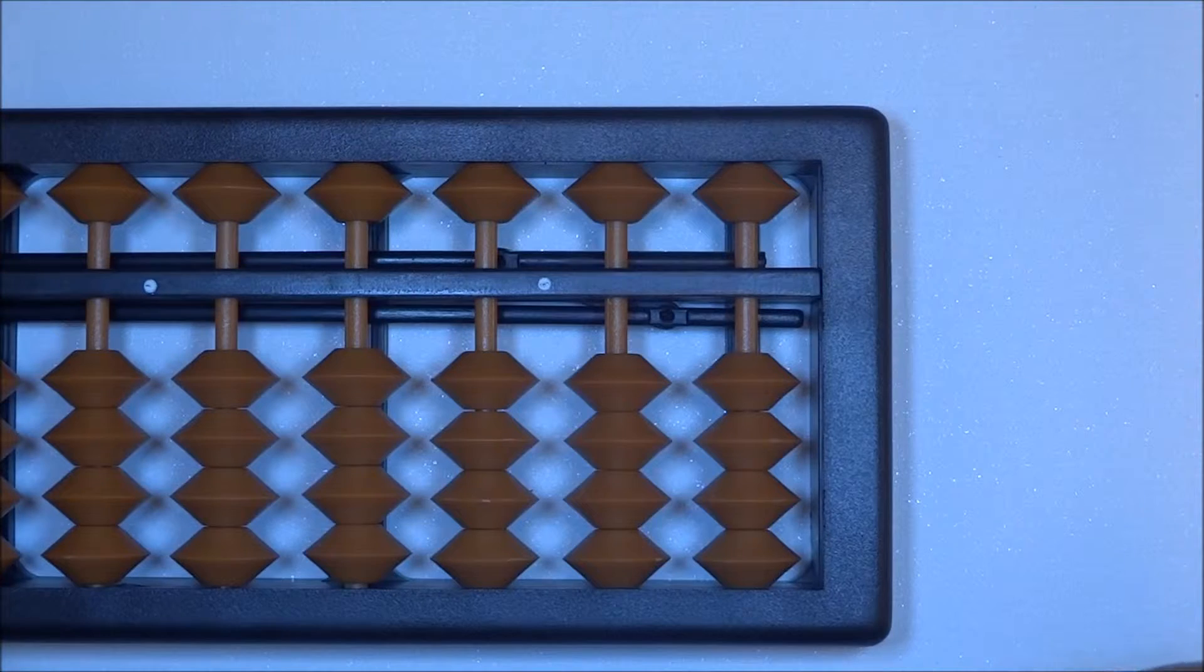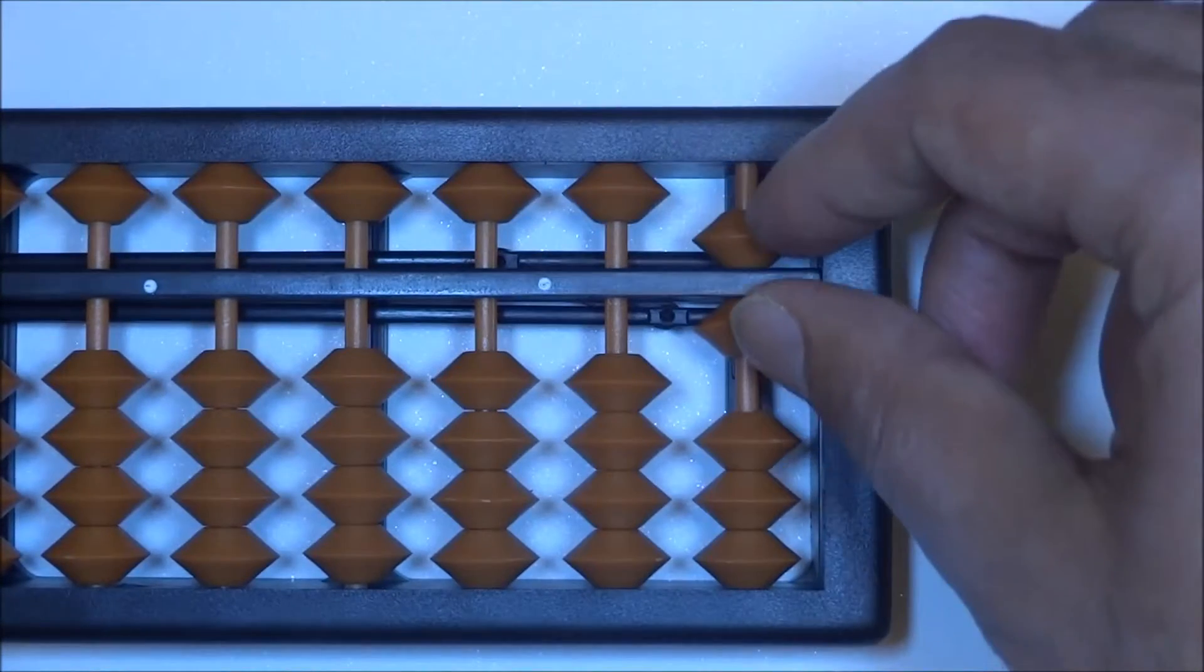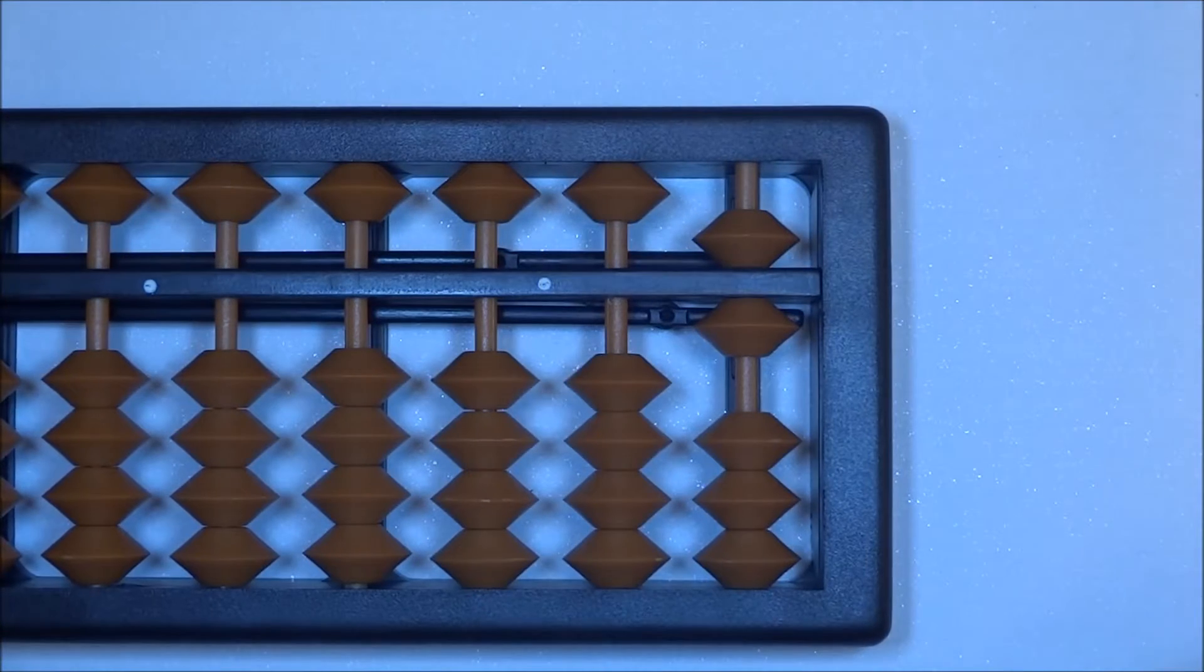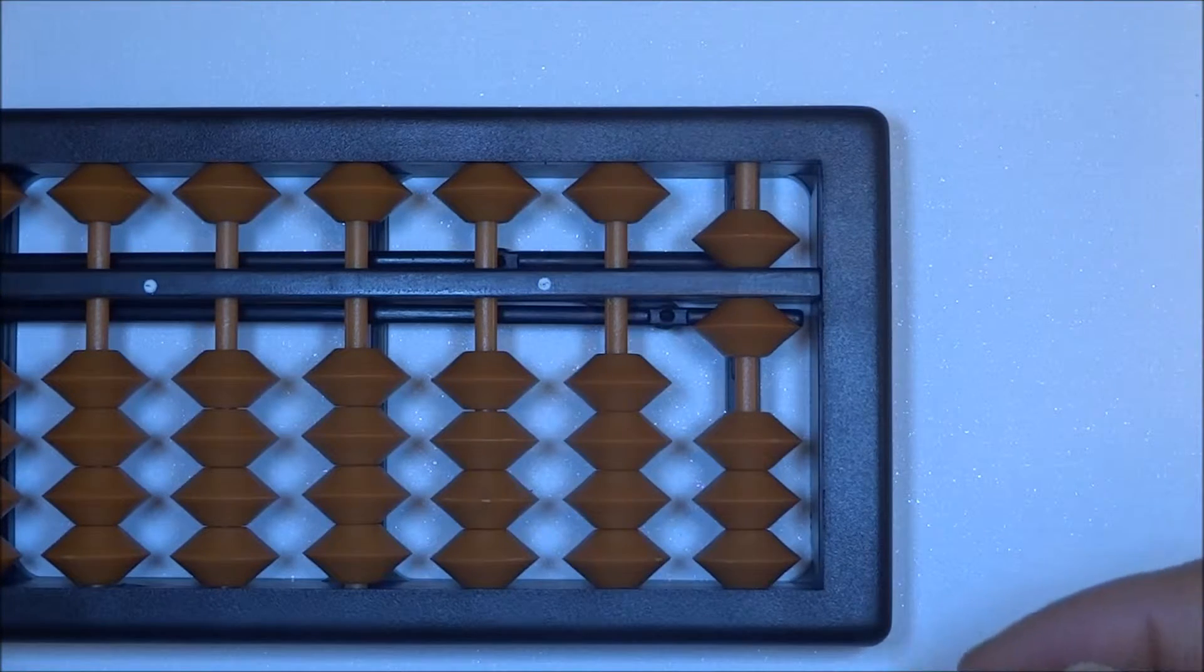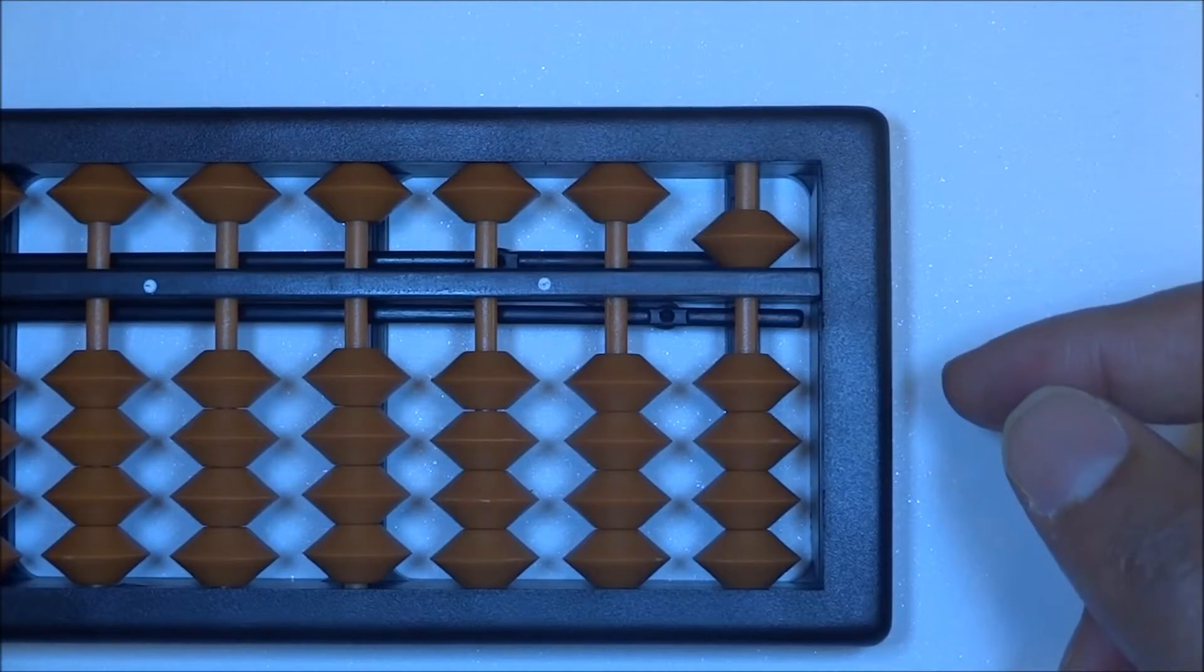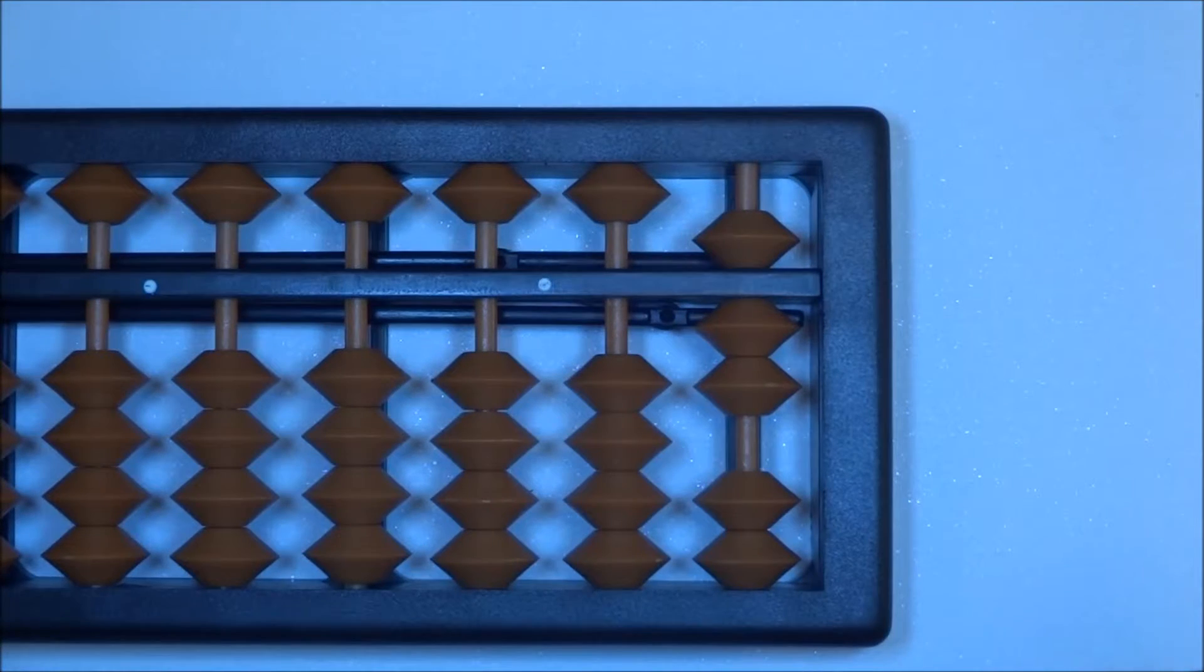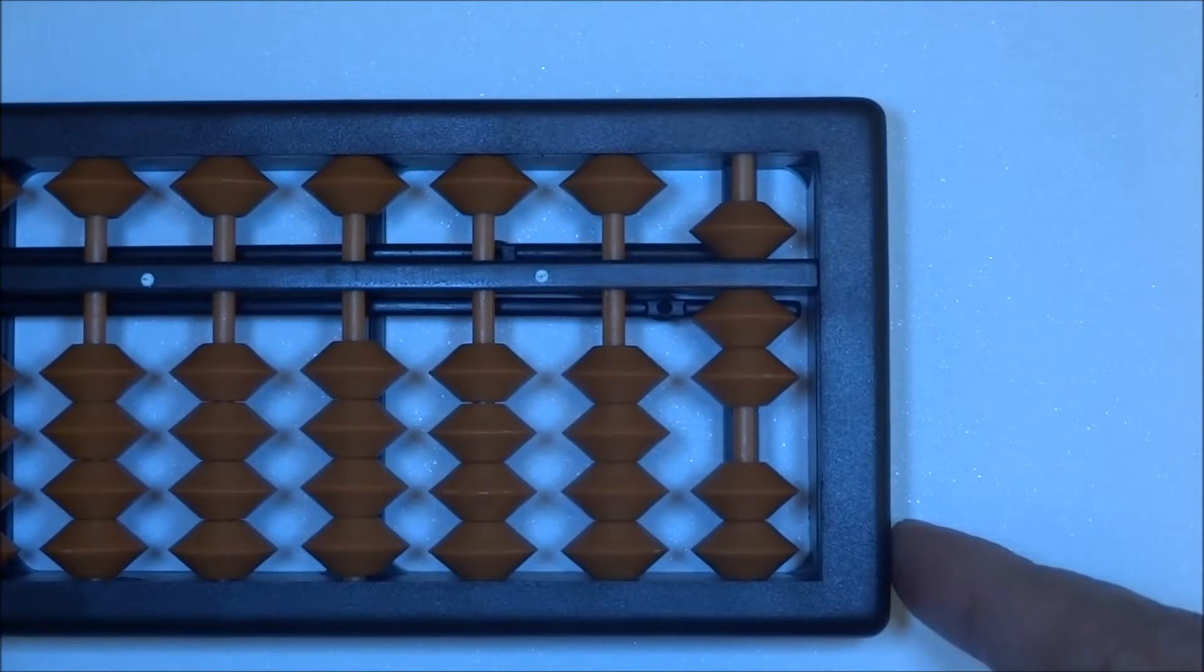The next one we're going to try is move up six. Here we go, we have six. Next is move down one. Here we go, move down one. Move up two. What we have is a seven total. We're going to go ahead and clear the abacus.